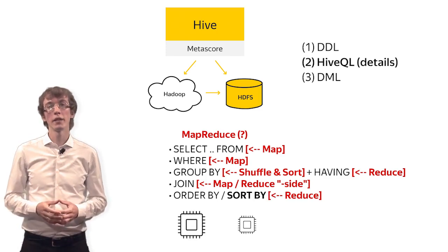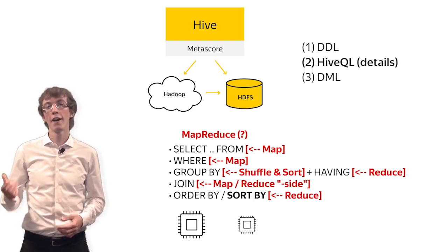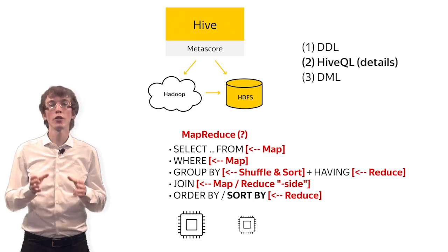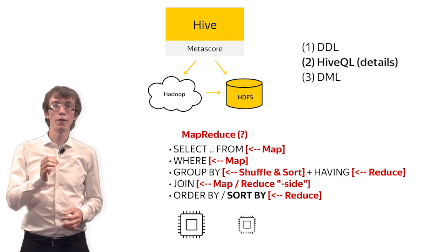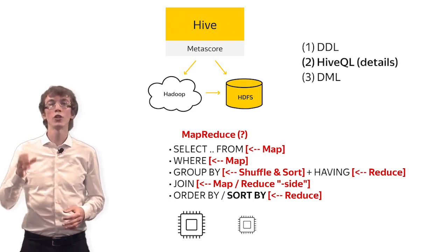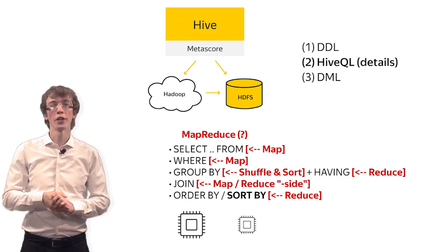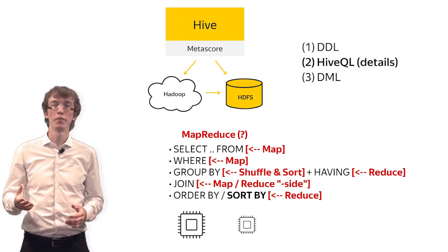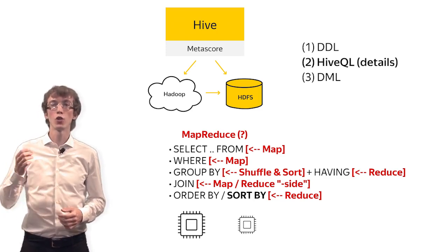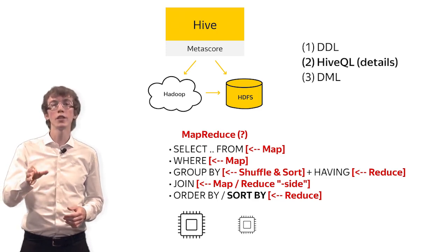ORDER BY is tricky — you rarely need to order the whole distributed dataset. That is why Hive developers provide the SORT BY statement. SORT BY guarantees sorting within each file in the HDFS folder, which is related to a particular reduce worker. Therefore, you can have an arbitrary number of reducers and a high level of parallelism. ORDER BY guarantees total ordering and is therefore much more expensive, so please use it with care.